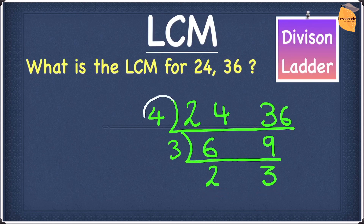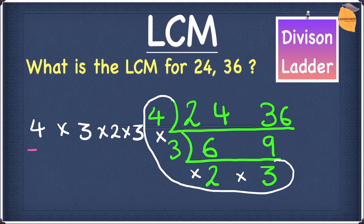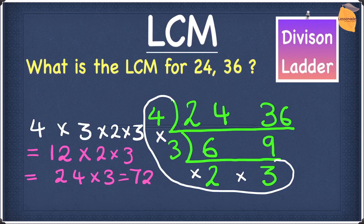So let's circle the four, the three, the two, and the other three. We have to multiply these numbers: four times three times two times three. Four times three gives twelve. Twelve times two gives twenty-four. Twenty-four times three gives seventy-two. So the LCM for twenty-four and thirty-six is seventy-two.